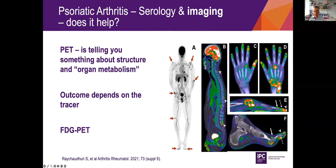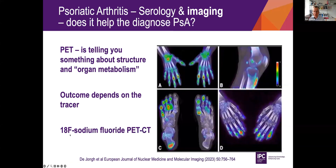This is a PET scan — an FDG PET — where you can see enthesitis here in the elbow and inflammation in the shoulders. You can also see that some of the ligaments in the spine are affected by inflammation. The problem is that you get a lot of other findings, such as lymph nodes that turn up positive, so you can get confused by the images. Depending on the tracer, you can get a completely different picture. Some new tracers show osteitis — how much bone inflammation is present — giving us new opportunities to evaluate early signs of psoriatic arthritis.